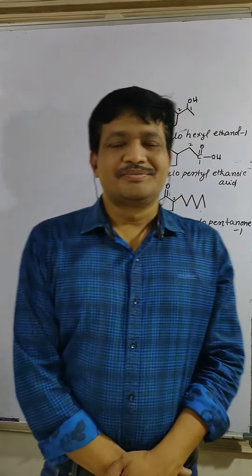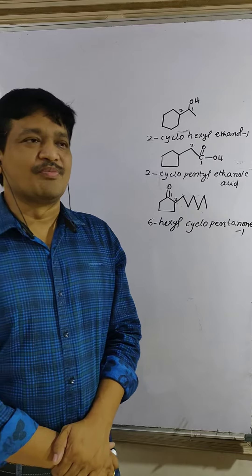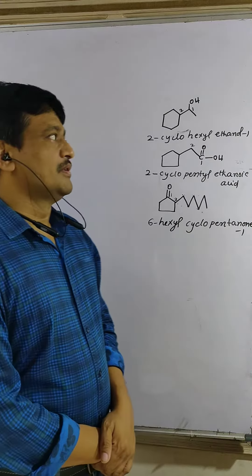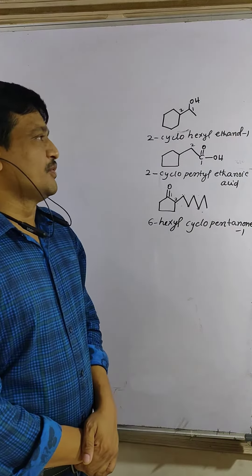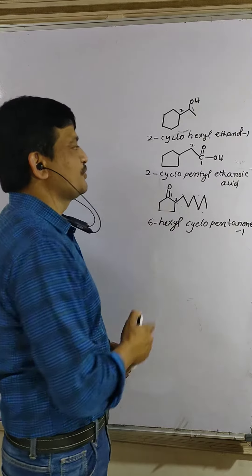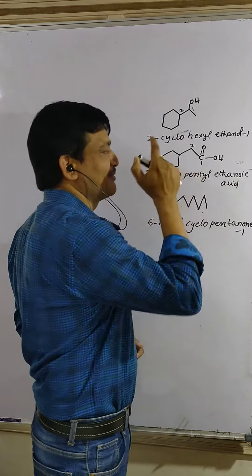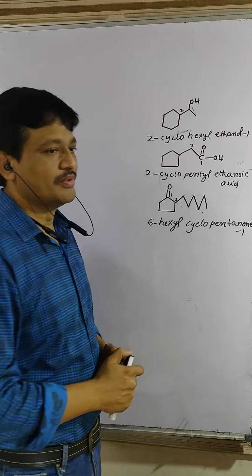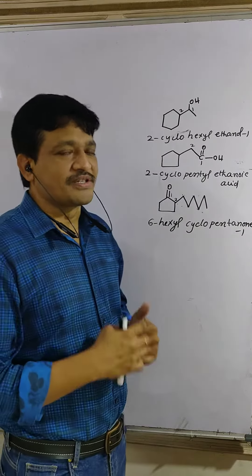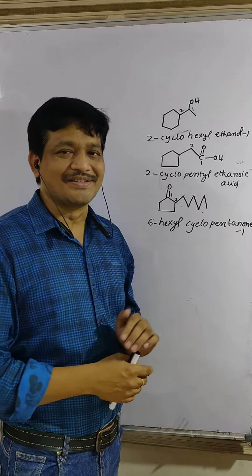Hi students, now we will discuss some important names of compounds. Some compounds have a ring containing a functional group, and some compounds have the functional group on outside carbons. Here, priority is given to the functional group, not to the cyclic ring.